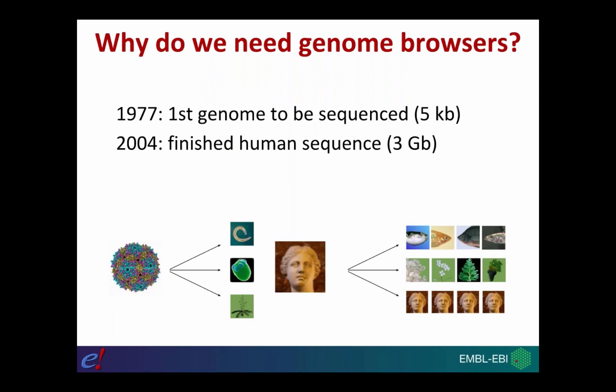Ensembl is a genome browser — it's one of many that are available — and we need genome browsers for a very important reason: we have lots of genome sequences for lots of different species available these days. The first organism to have its genome sequenced was a bacteriophage back in 1977 by Fred Sanger and his team here in the UK, but it was only five kilobases in size. That technology laid the foundations for more and more complex organisms to have their genome sequenced.